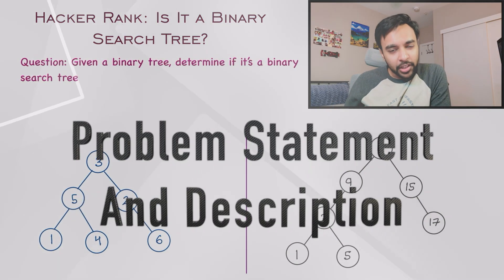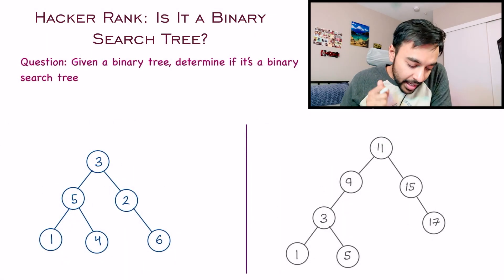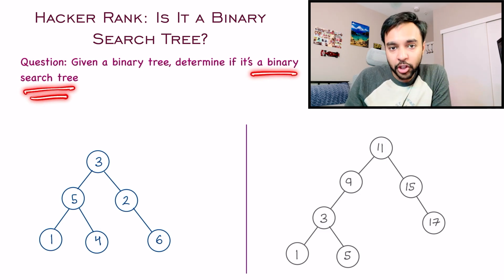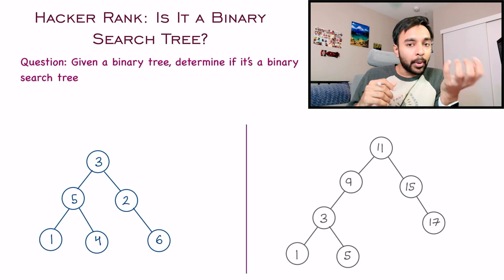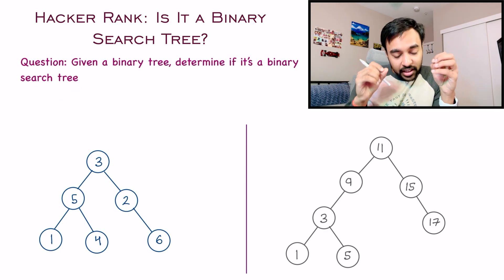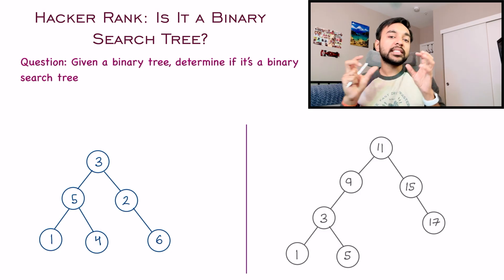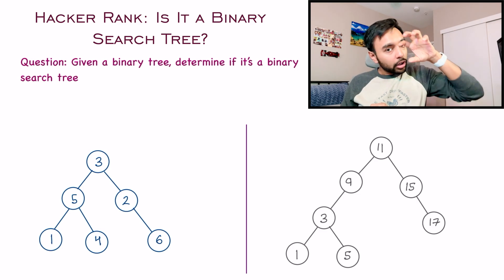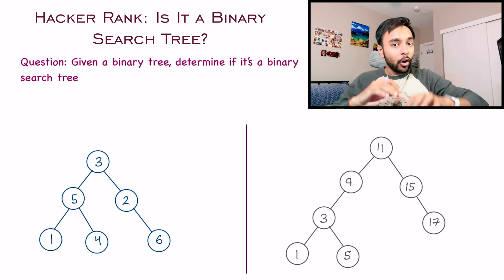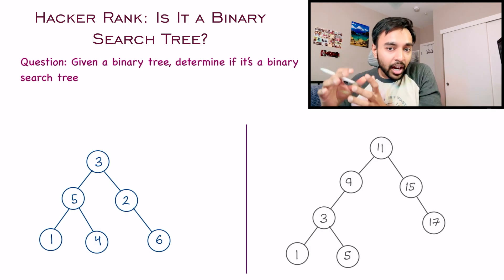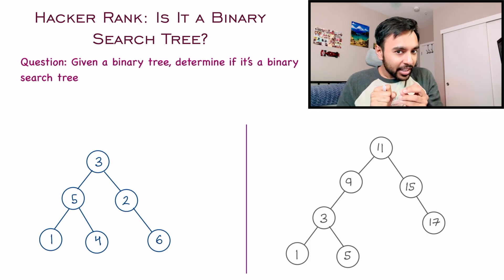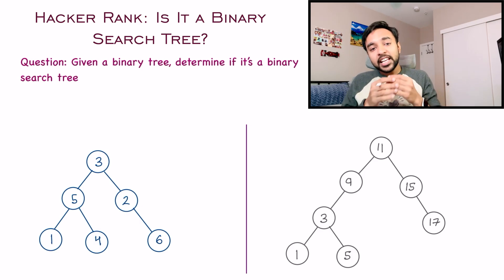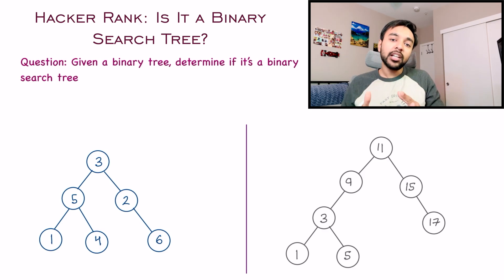First of all, let's make sure that we are understanding this problem statement correctly. In this problem, you are given a binary tree and you have to determine if it is a binary search tree or not. The common factor is that each node can have a maximum of two children — and hence the name binary. But in a binary search tree, all of the nodes on the left tree will be smaller, and all of the nodes on the right subtree will be larger than the root node. And that condition is true for each and every node in the binary tree. So technically, you can say that every binary search tree is a binary tree, but not the other way around.